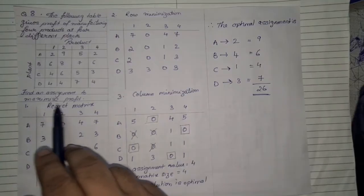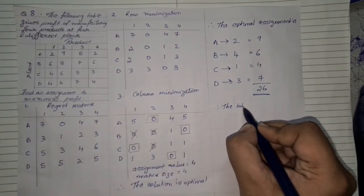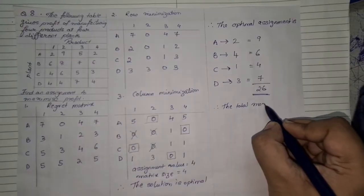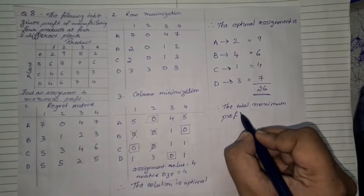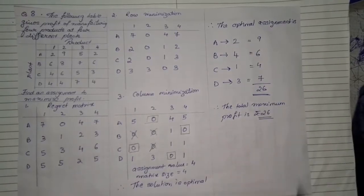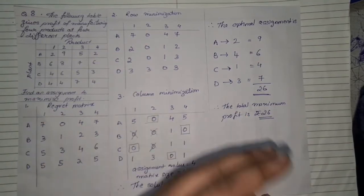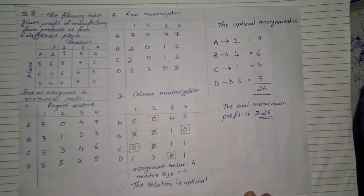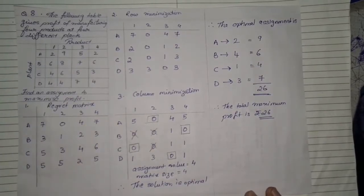They are asking you to maximize the profit so we can add therefore the total maximum profit is Rs.26. Now if the sum is in 1000 so this would have become 26,000 or in lakhs then 26 lakhs depending on whatever type of question they have or whatever values or units they are given in the question.